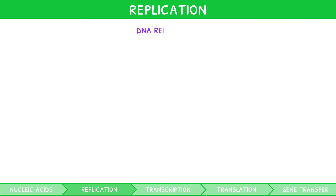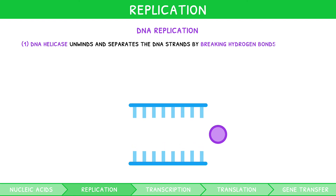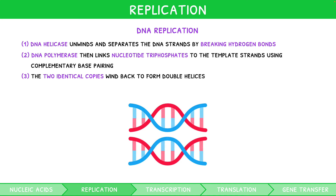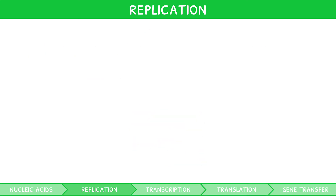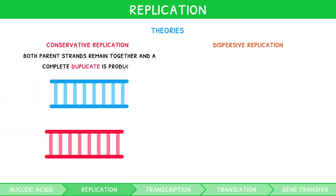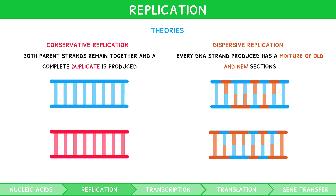So, what occurs during DNA replication? Several key enzymes work to duplicate the DNA. First, DNA helicase unwinds and separates the DNA strands by breaking hydrogen bonds. DNA polymerase then links nucleotides, known as nucleotide triphosphates, to the template strands using complementary base pairing. The two identical copies wind back to form double helices. However, semi-conservative DNA replication was not the only theory proposed. Two alternative theories included conservative replication and dispersive replication. Conservative replication stated that both parent strands remained together and a complete duplicate was produced. Dispersive replication stated that every DNA strand produced had a mixture of old and new sections.